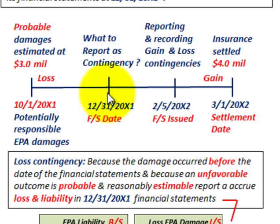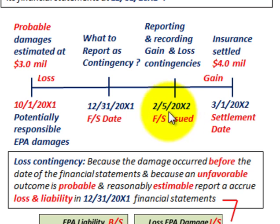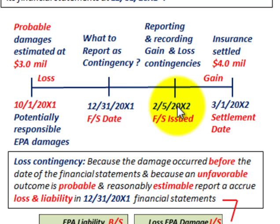For the insurance settlement, we had a very high probability of recovery, but we didn't actually make the recovery until after the reporting date of 2-5-20X2. Since the insurance settlement was highly likely, on our financial statements at 12-31 — recorded on 2-5-20X2 — we would note the possibility of this gain contingency only in the notes to the financial statements. Even though it was highly probable you'd receive it, you would only report it in the notes.